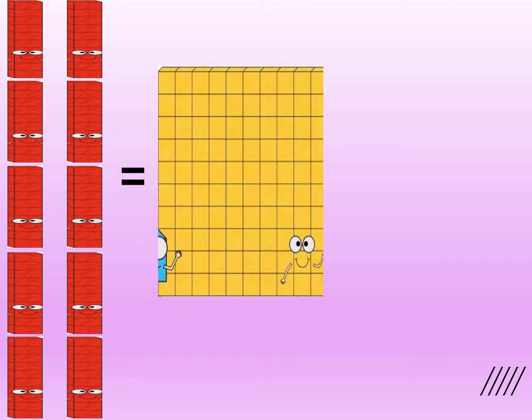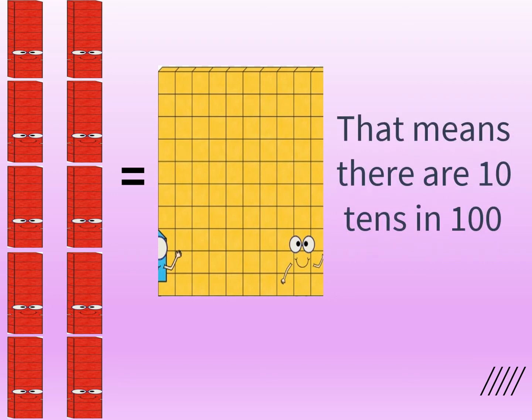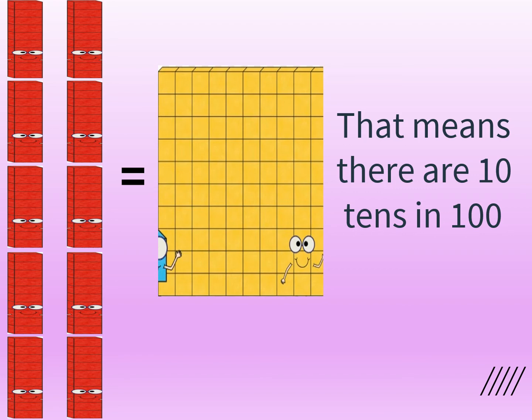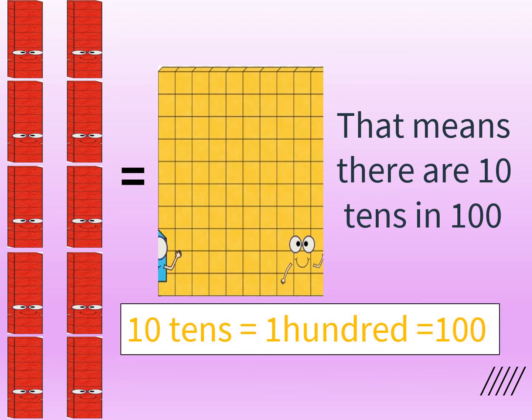On the screen we can see that there are 10 tens. Now these 10 bars of 10s have been joined together to make this yellow grid. This yellow grid represents 100. That means there are 10 tens in 100. 10 tens is equal to 100. We can write it as 100.